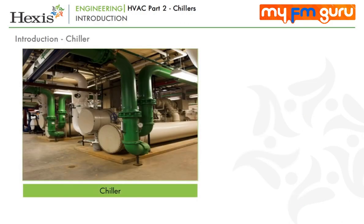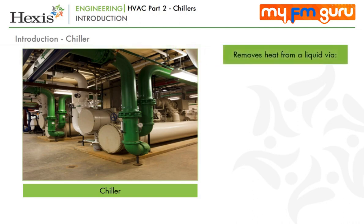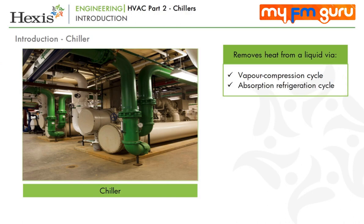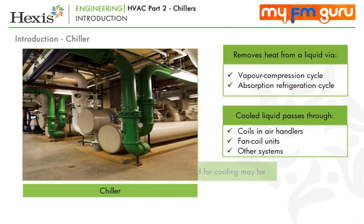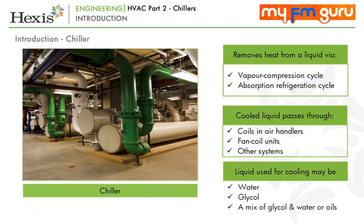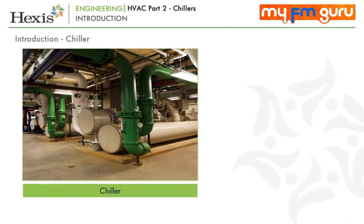A chiller can be described as a machine that removes heat from a liquid via a vapour compression or absorption refrigeration cycle to produce chilled liquid. This cooled liquid flows through pipes in a building and passes through coils in air handlers, fan coil units or other systems, cooling and usually dehumidifying the air in the building. The liquid used for cooling may be water, glycol, a mix of glycol and water, or oils. For general AC requirements, water is preferred due to lower cost, but some processes may require use of other liquids.